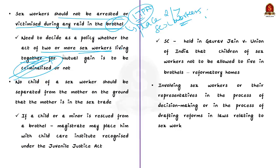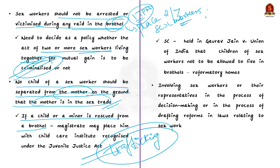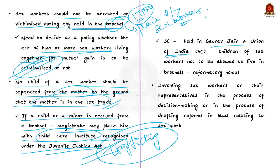The third recommendation says no child of a sex worker should be separated from the mother merely because the mother is in the sex trade. If a minor is living in a brothel or with sex workers, it should not be presumed that he or she has been trafficked. Though the law does not mandate separation, it is assumed a child is trafficked if found in a brothel. In Gaurav Jain versus Union of India, the Supreme Court held that children of sex workers should not be allowed to live in brothels, and that reformatory houses should be made accessible to them. A suitable amendment should be made to accommodate these directions and avoid confusion.